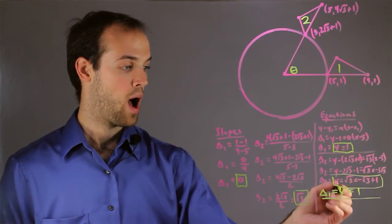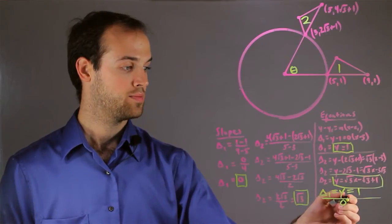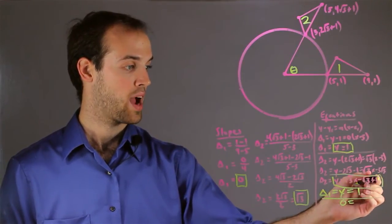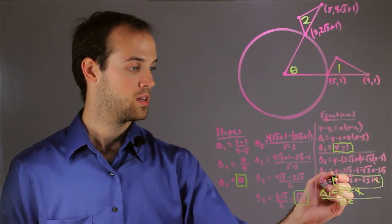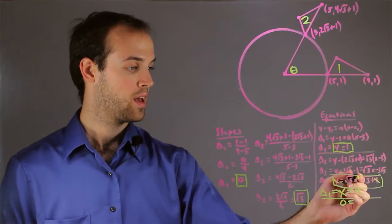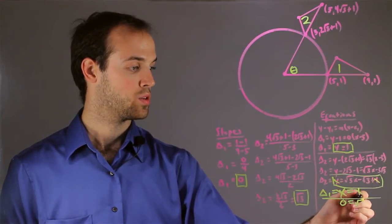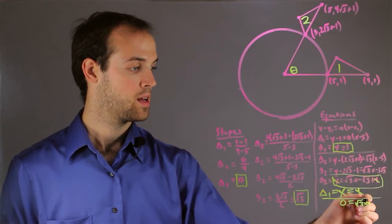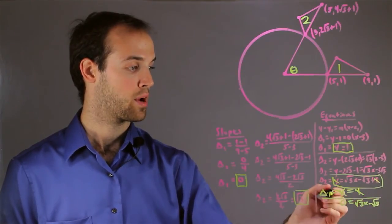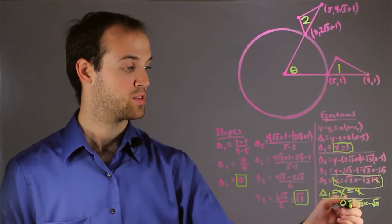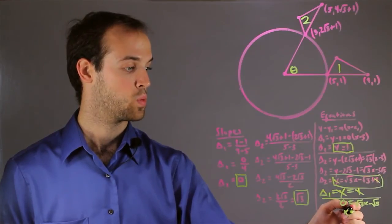So I do y minus y, which is 0, and then I'm going to subtract this 1 from this 1, which means that they are going to cancel out, along with the y's. And I'm left with 0 equals root 3x minus root 3. And from there, I would just bring the root 3 back over to the other side, and I would divide by root 3 to find that x equals 1.